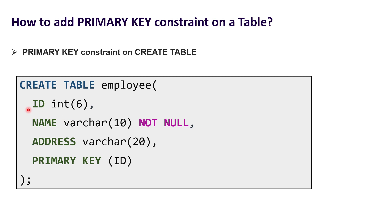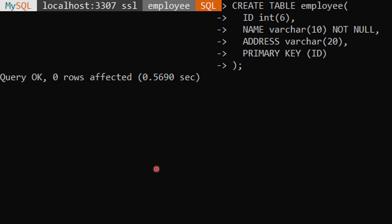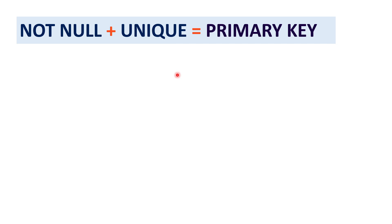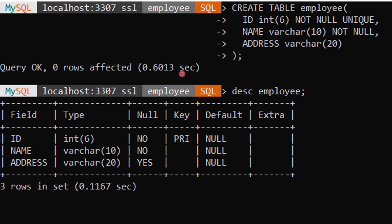At the time of table creation we add the primary key constraint at the end — we write PRIMARY KEY and inside the parenthesis write the column name, like id. We can also specify a combination of columns, like id and name, as the primary key. After executing the query with id as primary key and checking the schema, you can see the value in the key column is 'PRI' for id. Also, applying NOT NULL and UNIQUE together gives the same result — id becomes the primary key.